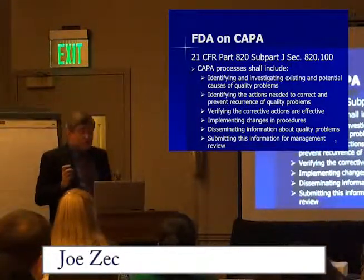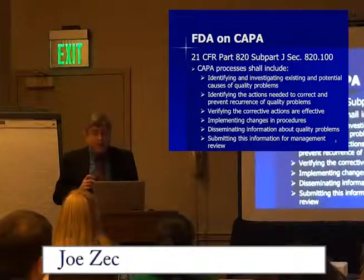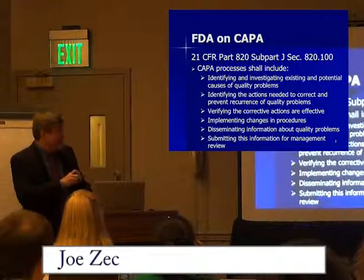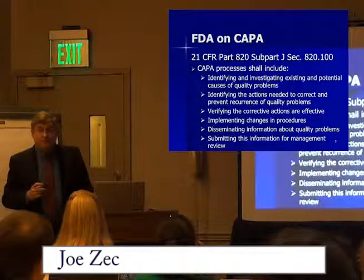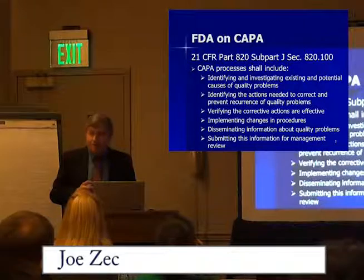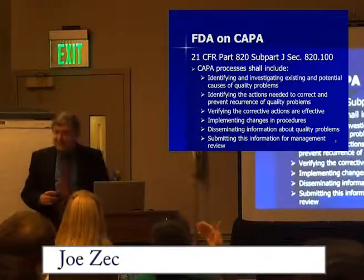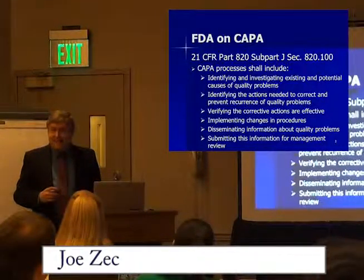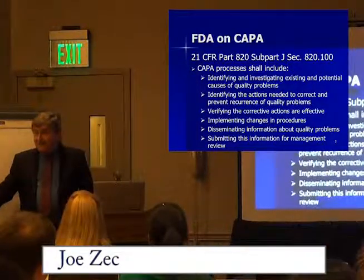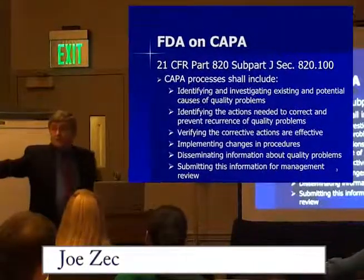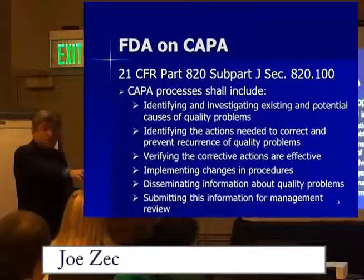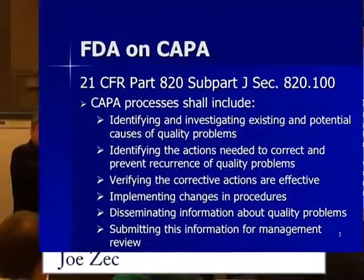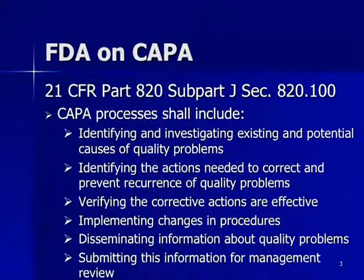Moving on — CAPA processes shall also include identifying the actions needed to correct and prevent recurrence of quality problems. Prevent recurrence is important. A colleague asked: how can you prevent a problem when it's already happened? They didn't understand that even though the problem happened here, there's still the potential for it to happen at another plant, or a warehouse using the same storage and distribution system. Make a mistake once, correct it, and don't want to see that mistake happen again — because recurrence becomes a systemic problem for investigators.